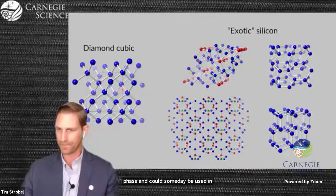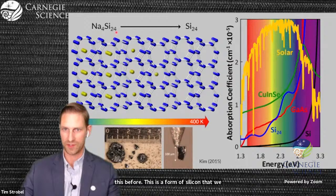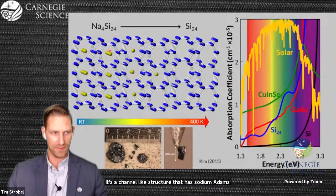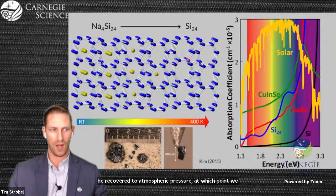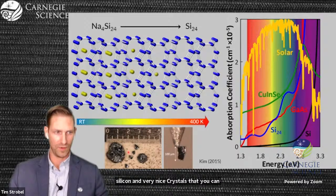I'll give you quickly one example. This is a form of silicon that we discovered several years ago called silicon-24. It starts at high pressure by making a compound called NA4SI24, a channel-like structure that has sodium atoms trapped in silicon channels. This can be metastably recovered to atmospheric pressure, at which point we can remove the sodium atoms.